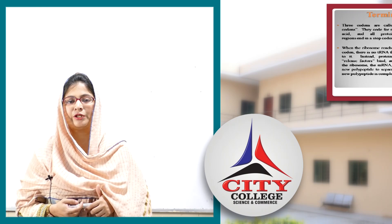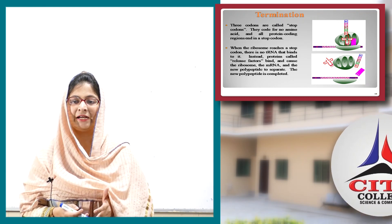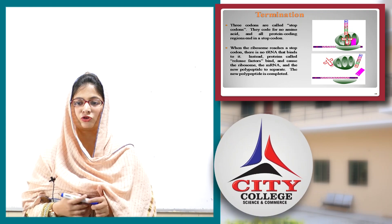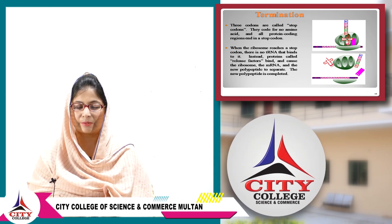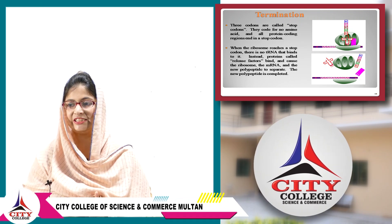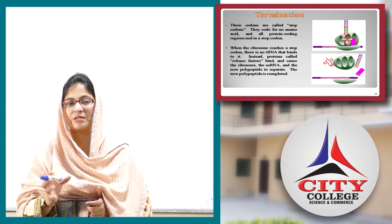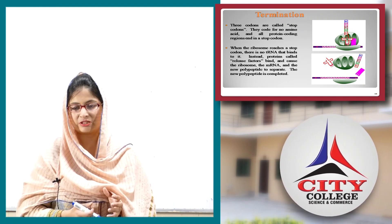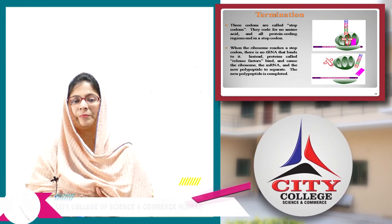The last step is termination. Termination occurs when the ribosome reaches a stop codon — UAA, UAG, or UGA. These stop codons do not code for any amino acid, and no tRNA binds to them. Instead, release factors bind and cause the ribosome, mRNA, and new polypeptide to separate. After disassembly, there are conformational changes and post-translational modifications, after which the polypeptide becomes a functional protein.